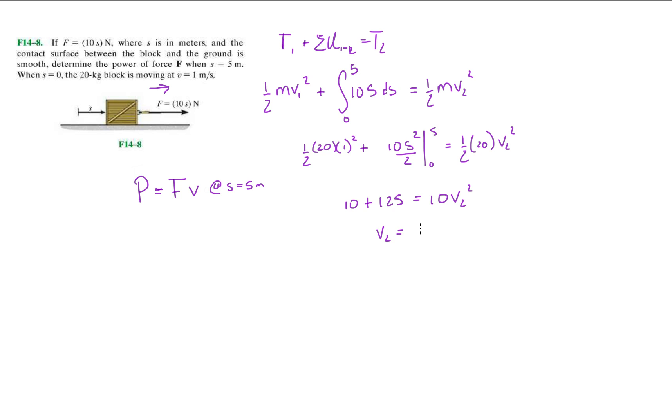When we evaluate it, it's 125, and over here we have 10 v2 squared. All right, so when we isolate v2, we're gonna get 135 divided by 10, so 13.5, and you end up with a velocity of 3.67 meters per second.